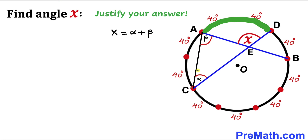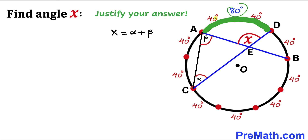Now let's make an observation. We can see that this angle alpha is at the circumference for this arc AD. And this arc AD is going to be 80 degrees because 40 plus 40 gives us 80 degrees.